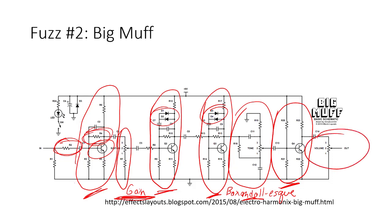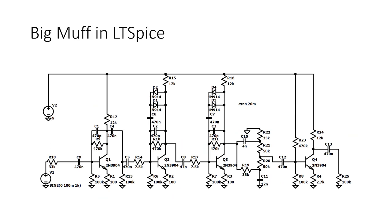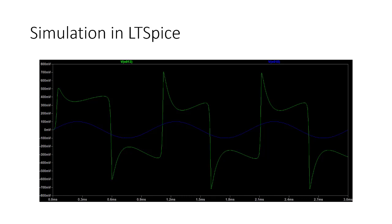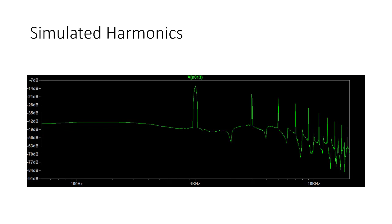Here's that same circuit in LTSpice with all values filled in — there are many different versions of this circuit with different values, and this is one of the more popular ones. The input and output for one setting with the tone knob at midpoint shows it's not really hard clipping like the Fuzz Face — it's just adding a lot of harmonics to the output. The harmonic structure shows only odd harmonics with no even harmonics, so it acts more like a clipping circuit than a fuzz face.